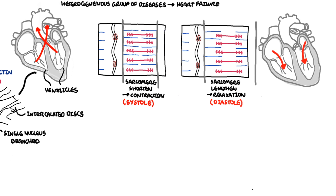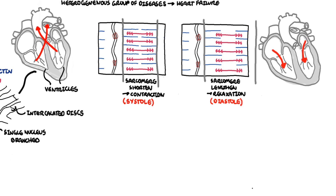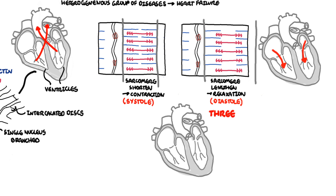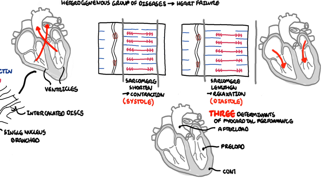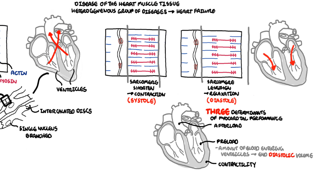Because we are focusing on cardiac muscle cells and cardiomyopathies, we need to learn some fundamental physiology. There are three major determinants of myocardial performance: preload, afterload, and contractility. Focusing on the ventricular cardiac muscle cells, preload is the amount of blood entering the ventricles during diastole, when the heart is relaxing. An increase in preload means a stronger contraction.